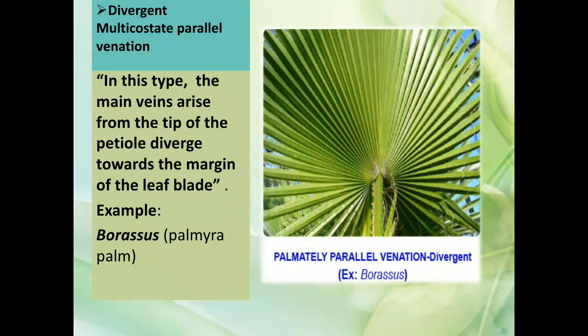Divergent multicostate parallel venation: in this type, the main veins arise from the tip of the petiole and diverge toward the margin of the leaf. You can observe this in the diagram.